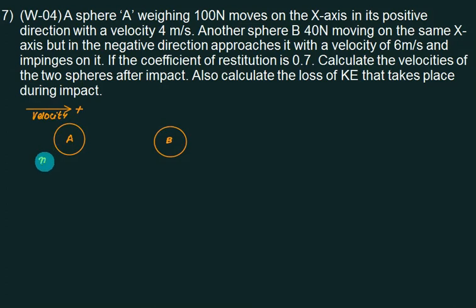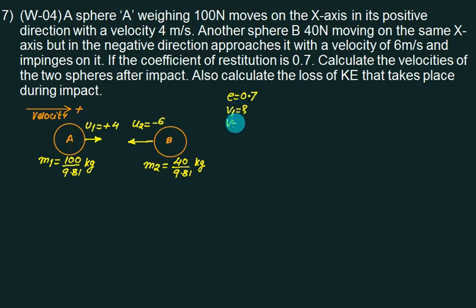This one is A and this one is B. The mass of A, M1, is equal to 100 divided by 9.81. Is move on x-axis in positive direction. Positive direction is this. x-axis positive. So we will call this is U1 and we assign plus 4 value. Another sphere B of mass equals to 40 by 9.81 kg. Moving on the same x direction but in the negative direction. Negative is this. It is considered as minus 6. Coefficient of restitution is 0.7. We want to calculate what is V1, what is V2. We want to find out the loss of kinetic energy.